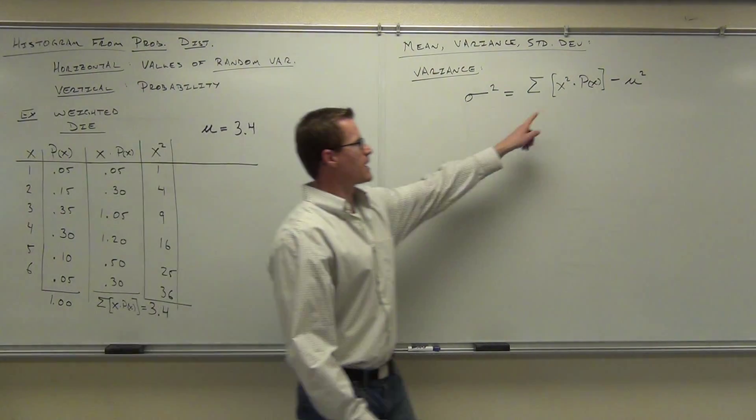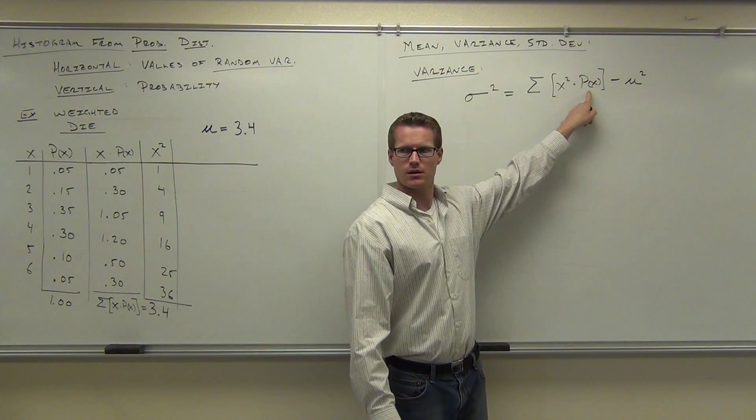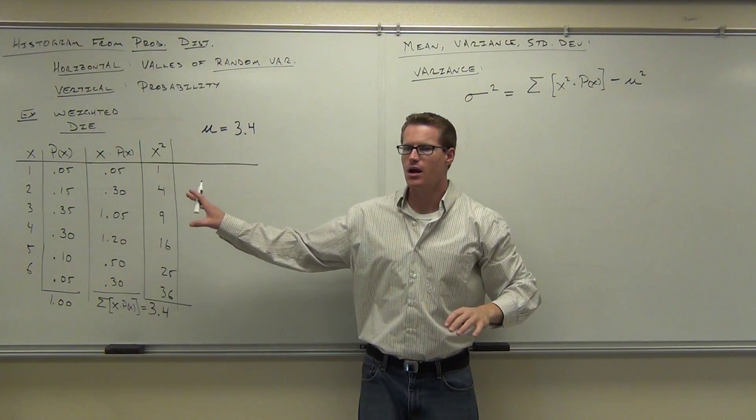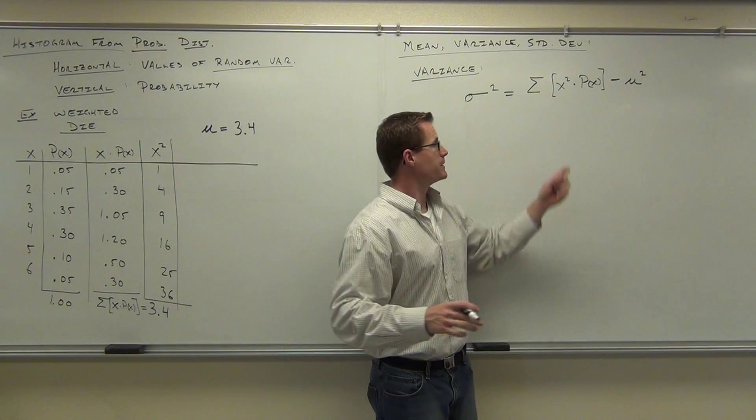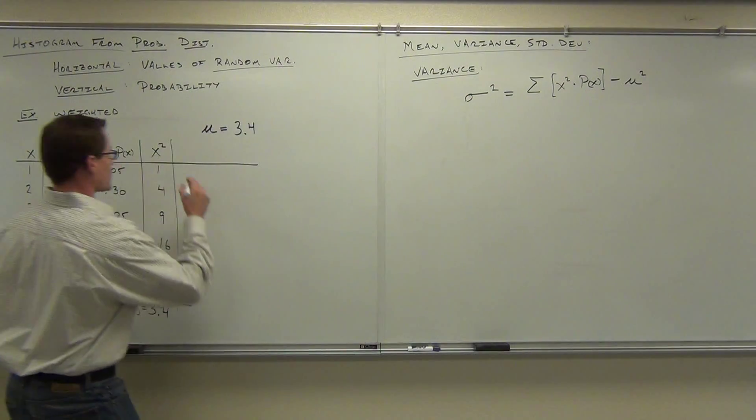Do we already have this? Do we already have our p of x's? Yeah, it's already on our column. We don't have to draw that again. But what we do have to draw is x squared times p of x. That's the next column we're going to have.